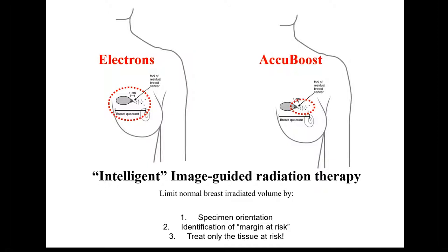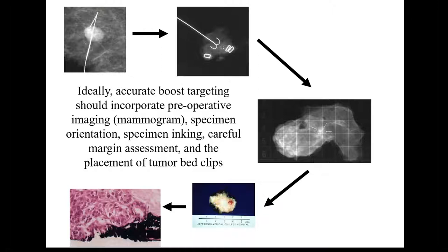A big advantage of AccuBoost is being much more selective in directing boost dose to reduce the volume of tissue exposed to high dose. This is not a new concept — breast surgeons go to great lengths to orient and ink the excision specimen to define close or positive margins. If a medial margin is close, they re-excise only that medial portion, minimizing surgical disruption.